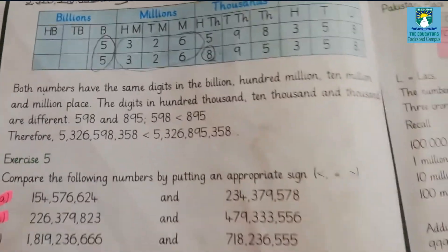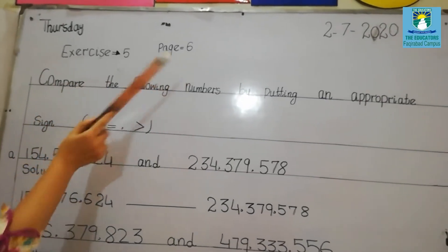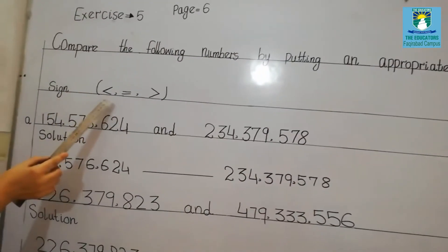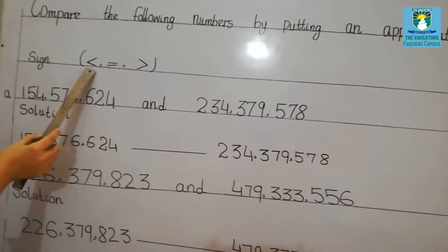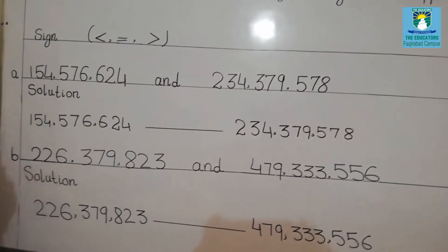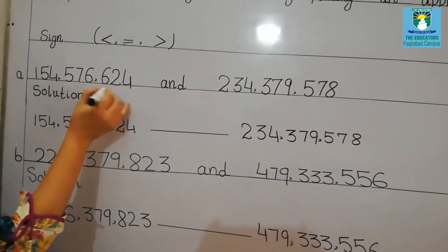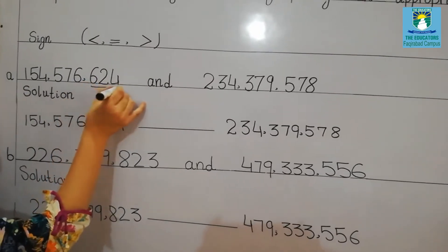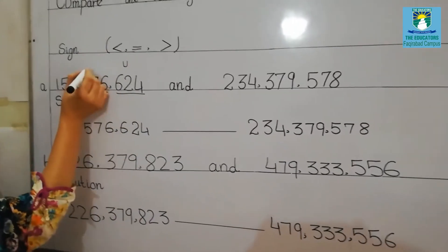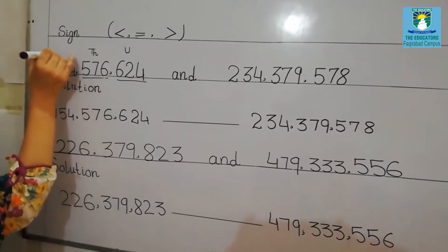Now we will start Exercise 5, page number 6: compare the following numbers by putting an appropriate sign — less than, equal, or greater than. Part A. First we will convert the values into periods: units period, then thousands period, and the third one is millions period.